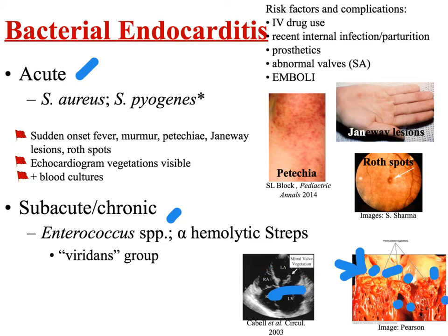For acute endocarditis, since you start empiric treatment before blood cultures come back, and 90% of the time you're dealing with Staph aureus, you start treating the patient with IV vancomycin — because you have to cover MRSA as well as MSSA. You don't start with anything that MRSA can escape. So you start with vancomycin.